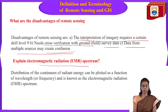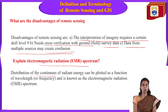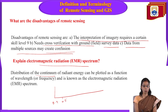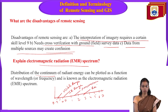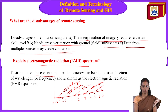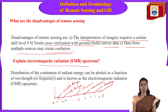Electromagnetic radiation and the mass spectrum: the distribution of a continuum of radiant energy can be plotted as a function of radiant energy — this is the electromagnetic spectrum. The spectrum ranges from the visible range (0.4 to 0.7 micrometers), then infrared, then thermal, then microwave, and then radio waves — from low to high frequency.